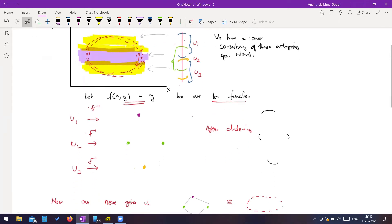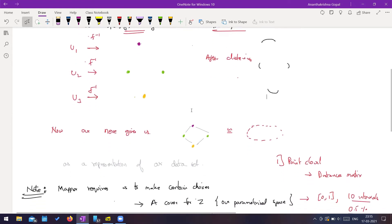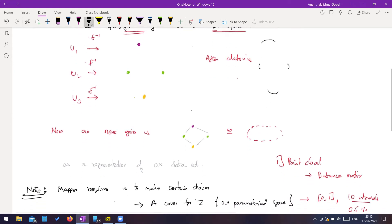Now, using this cover, if I construct the nerve, I will get this. So it gives me a square.